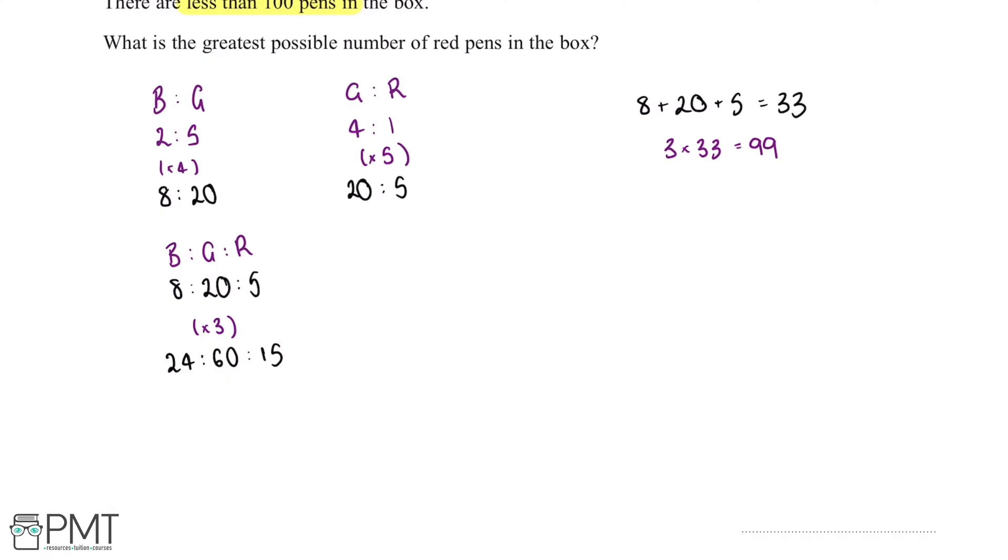And the ratio we'll want to look at is the third ratio here and the value we want to look at is this end value here as this is the number of red pens. So this tells us that 15 red pens will be in the box.